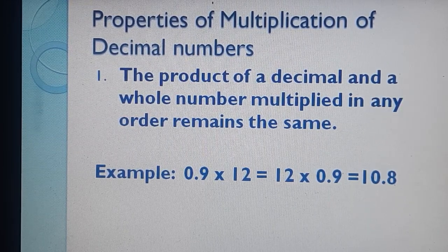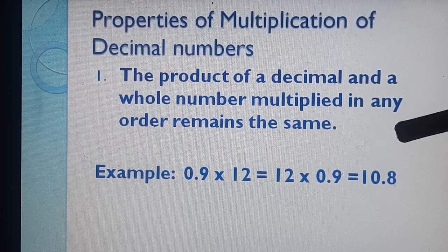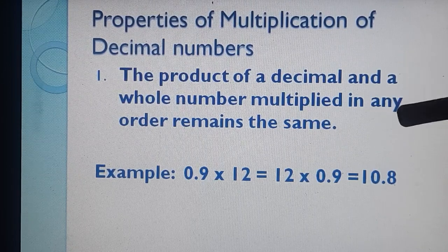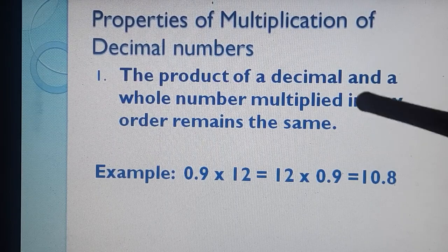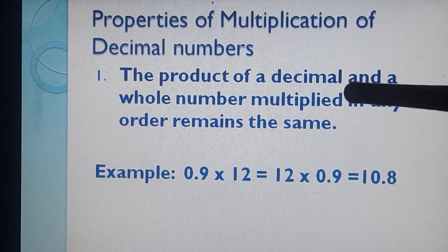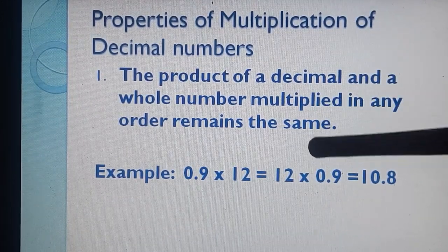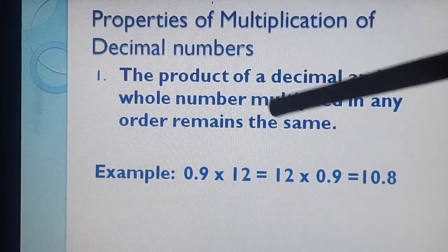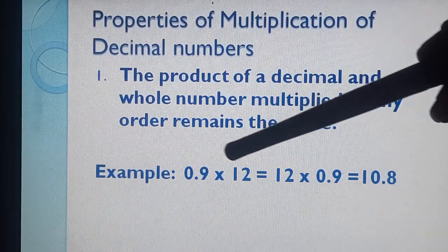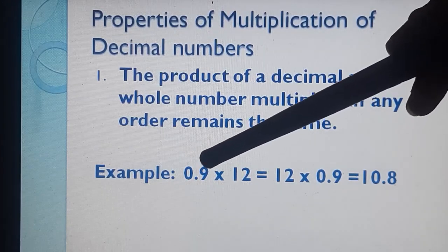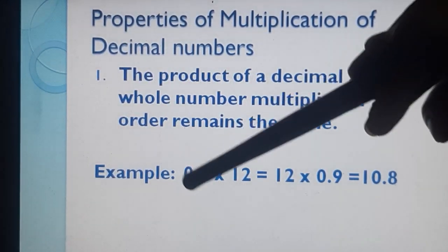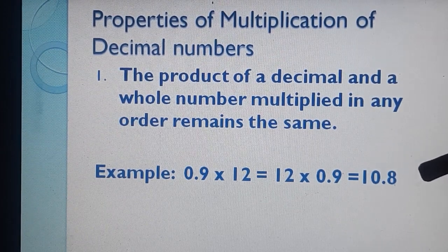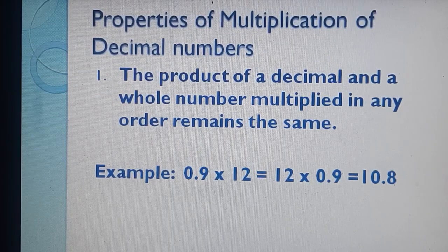From this example we can see how we will do multiplication of decimals. Our first step: take the two numbers whether in decimal form or whole number form — we take them as whole numbers, remove the decimals, and simply multiply. Step 2: in the product, place the decimal point after leaving digits equal to the total number of decimal places in both numbers. Here we did 12 × 9 = 108, then counted one decimal place to get 10.8.